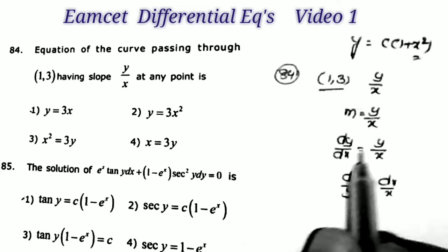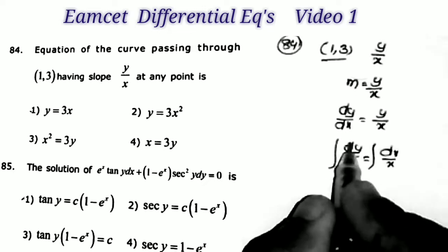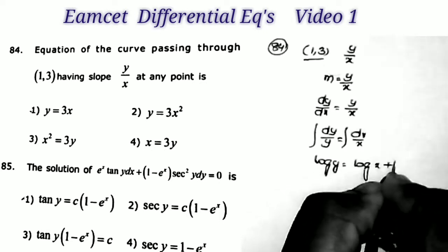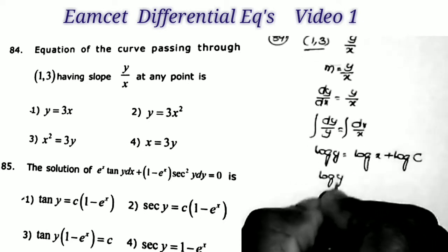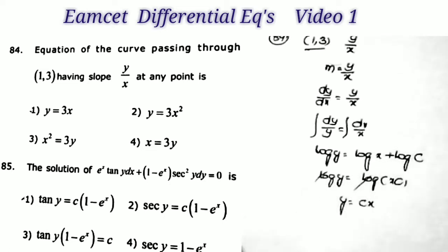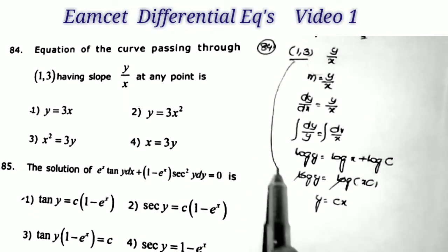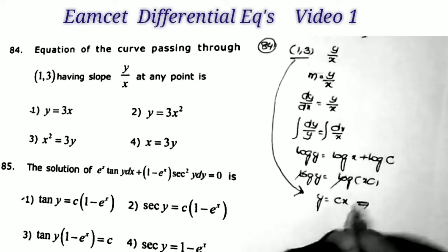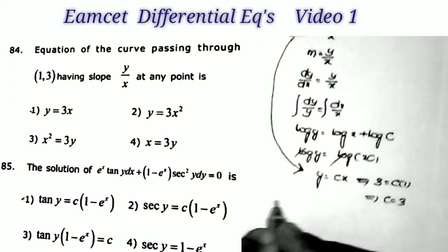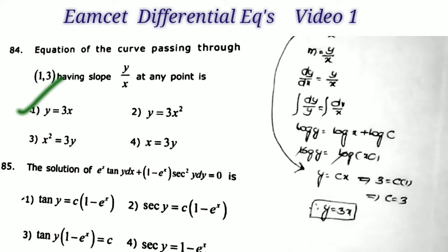Applying integration on both sides: integral of 1/y dy = log y, and integral of 1/x dx = log x, adding constant log c. So log y = log(cx), which gives y = cx. Since the curve passes through (1, 3), substituting: 3 = c×1, so c = 3. Therefore the answer is y = 3x, which is the first option.